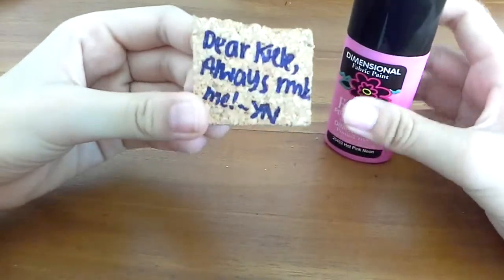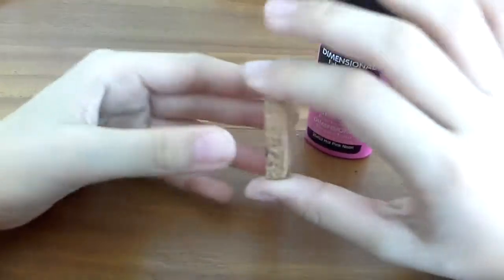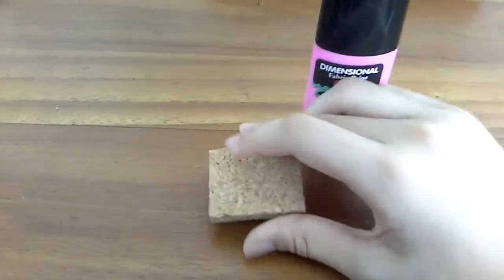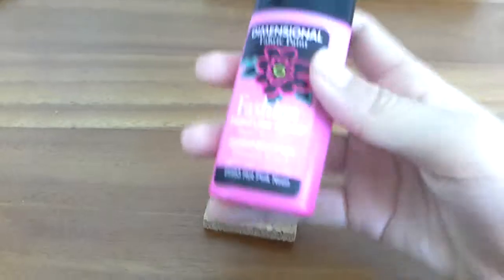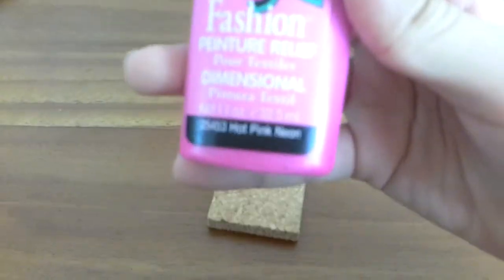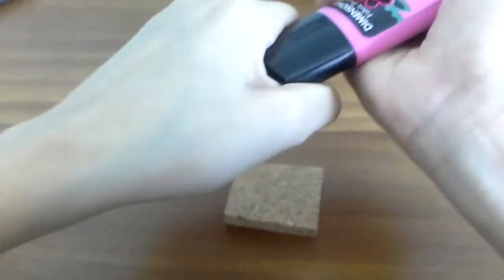So you turn your cork around where there isn't your message. And I'm going to use this color because it's a hot pink neon. I'm going to shake it. Okay, so once you have shaken it, it's ready to use.